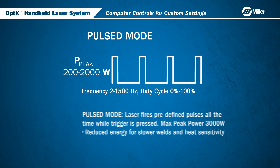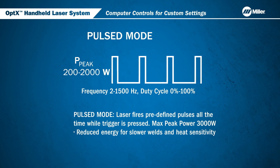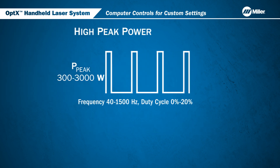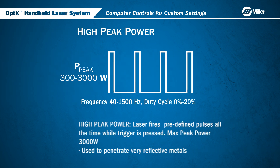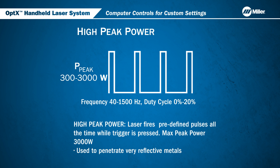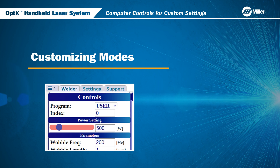Modulation Mode, or Pulsed Mode, fires predefined pulses all the time while the trigger is pressed. The maximum peak power is 3000 watts. This is used to penetrate very reflective metals. Now let's go into more detail on how you can customize modes for the Optics system.